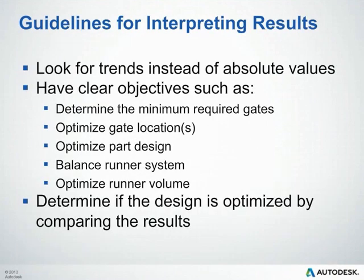Some general guidelines when interpreting your results: look for trends instead of absolute values, especially in the beginning. Have clear objectives such as determining the minimum required gates, optimizing gate locations, optimizing part design, balancing the runner system, optimizing runner volume, and determining if the design is optimized by comparing results.